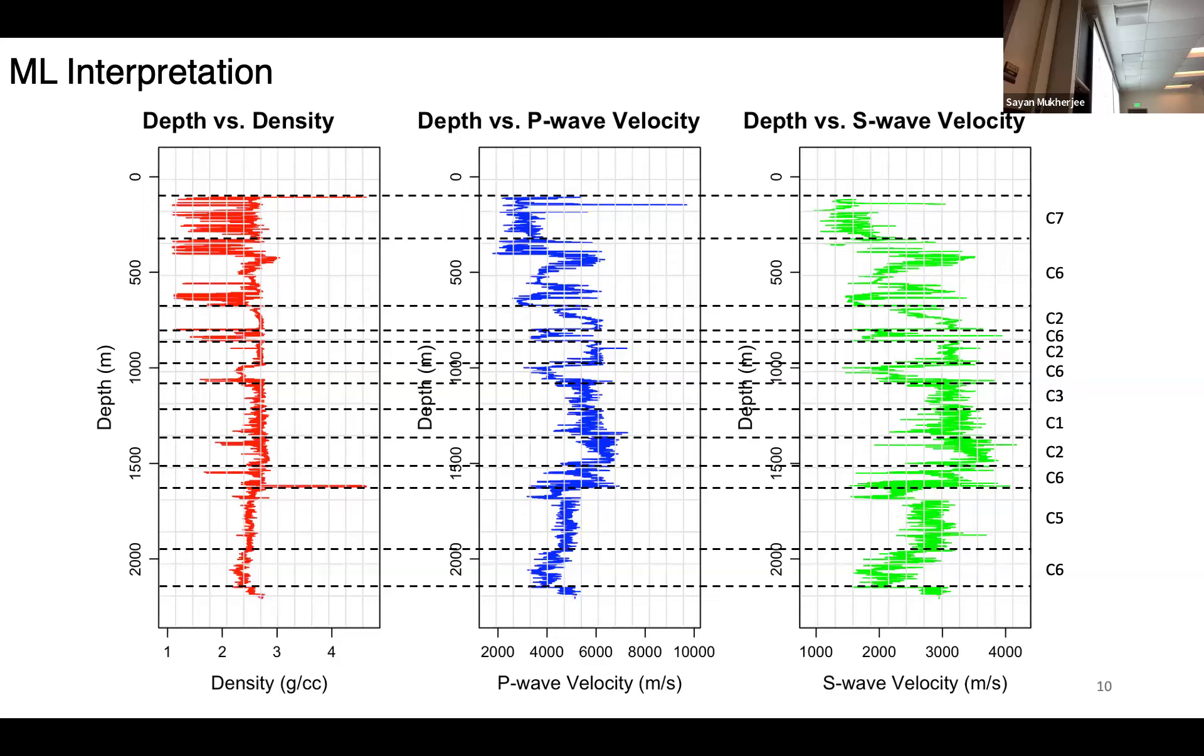Then we move on to see what kind of interpretation that our machine learning algorithm showed us. Our machine learning algorithm gave us around 12 to 13 layers from our 2,000 meter depth profile. It identified small changes in our depth, P wave velocities, or S wave velocities, and then it clustered these different kinds of sublayers.